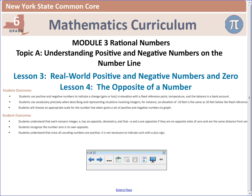Okay, today we're going to be looking at Lessons 3 and 4 for Module 3, which are real-world positive and negative numbers and zero and the opposite of a number. You're going to find that today is very similar to what we worked on yesterday. Today is a nice solid review of everything that we did yesterday, which is nice since there's like three of you here. Okay, so let's get started.